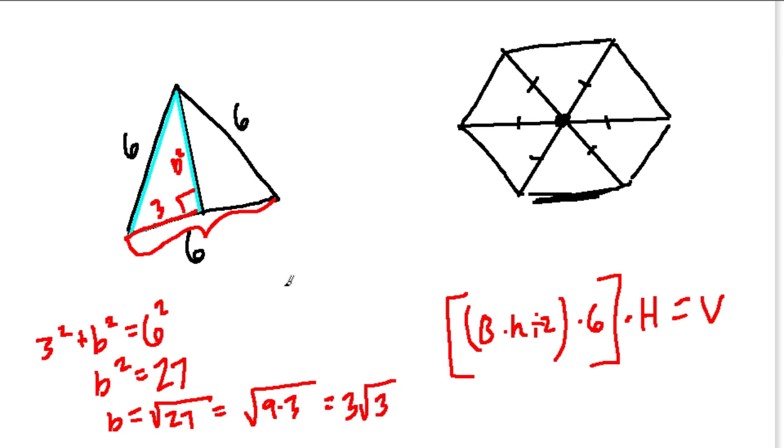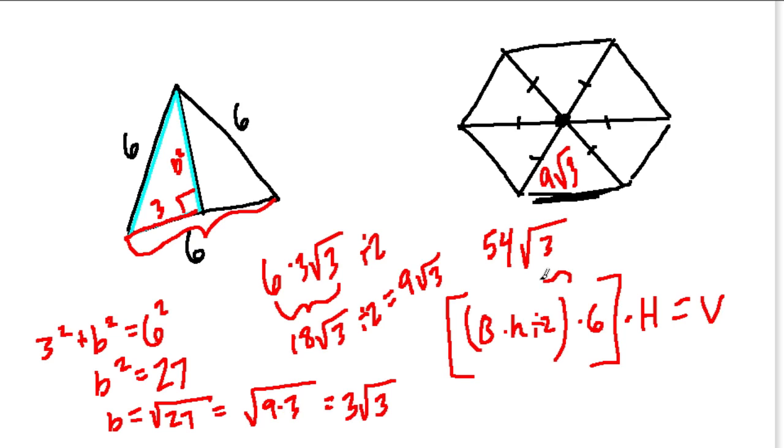That's the height of the triangle. So to find the area of this equilateral triangle, we take the full base of six times the height, right, times three radical three, and then divide it by two. So six times three radical three is 18 radical three, divided by two is nine radical three. So the area of one triangle is nine radical three, times six. Well, all six triangles, it's 54 radical three.